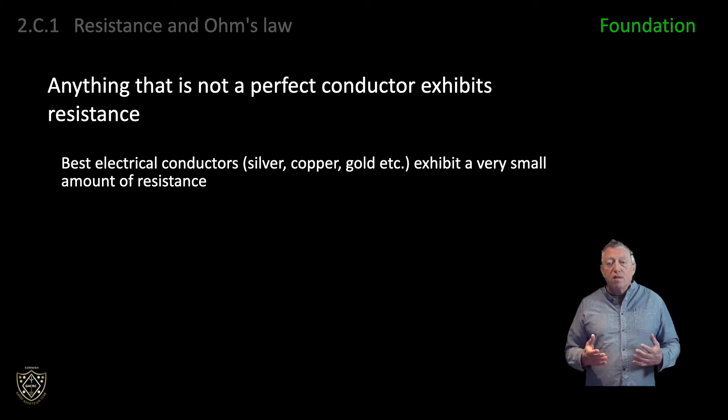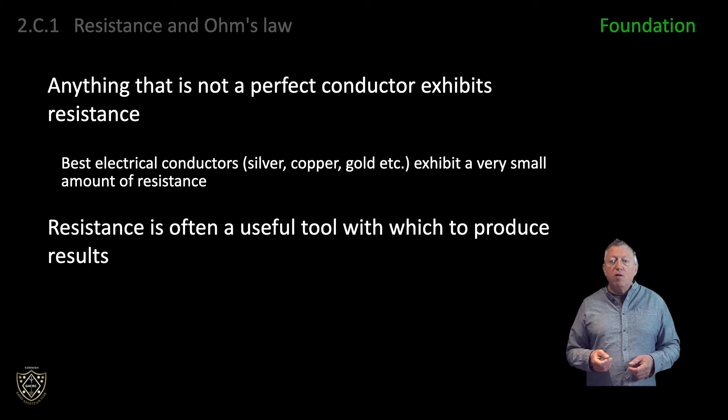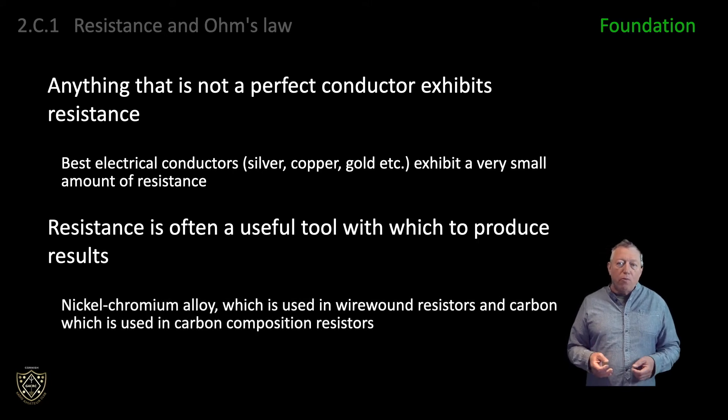In electronics, resistance is often a useful tool with which to produce results. You can use a resistor to limit the current to an LED or to bias a bipolar junction transistor, but more on that later. Materials like nickel chromium alloy, which is used in wire wound resistors, and carbon, which is used in carbon composition resistors, exhibit significant opposition to current flow, which allow them to be readily fashioned into resistors.